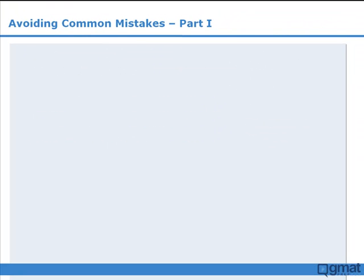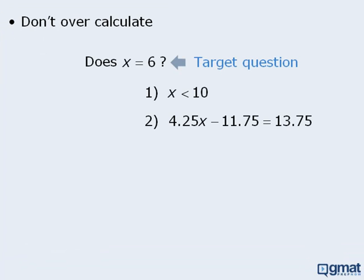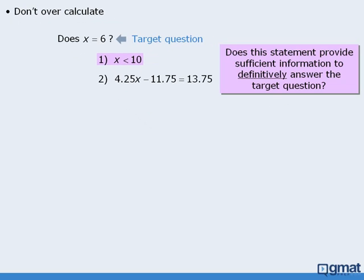The next tip is: do not over-calculate. Here's an example. In this question, we are asked to determine whether or not x equals 6. Statement 1 tells us that x is less than 10. Does this statement provide sufficient information to answer the target question? No — x could equal 6 or it could equal a different number. So statement 1 is not sufficient.